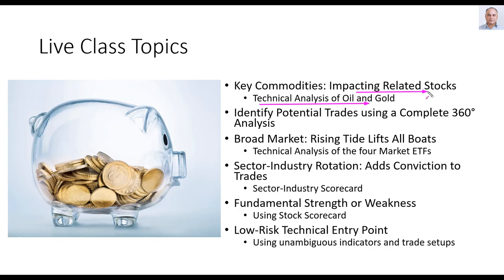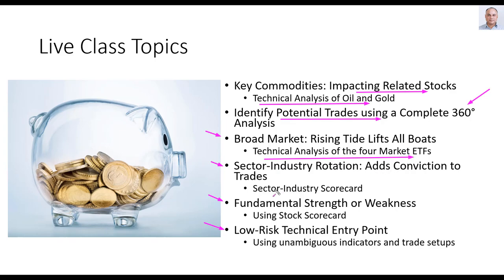In today's session, I will first analyze oil and gold using technical charts, as they tend to impact related stocks. Then I will identify potential trades using a complete 360-degree analysis. I call it 360-degree analysis because this technique allows you to identify trades aligned with the market's direction, sector and industry strength, fundamental strength of the stock, as well as technical strength. I will study market ETFs, sector and industry scorecards and heat maps, stock fundamentals using a stock scorecard, and technical analysis using the Q Trading Systems. Together, this technique allows you to identify trades quickly and confidently at the right edge of the chart.